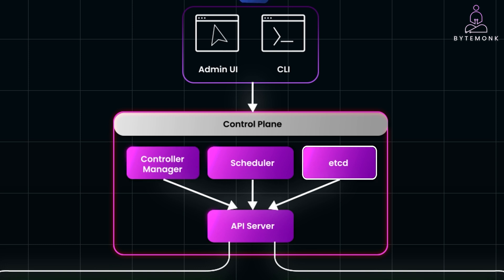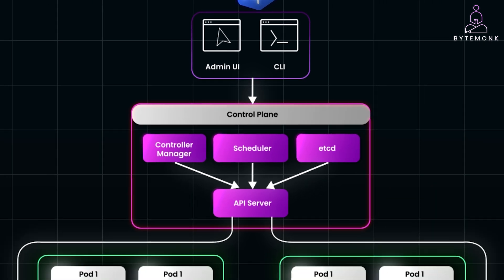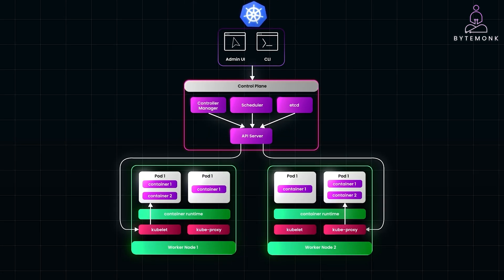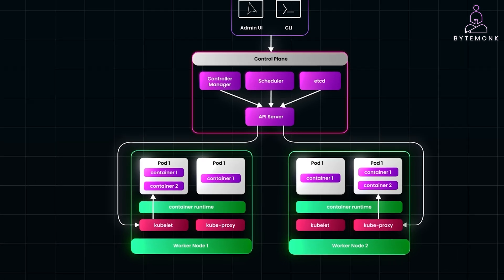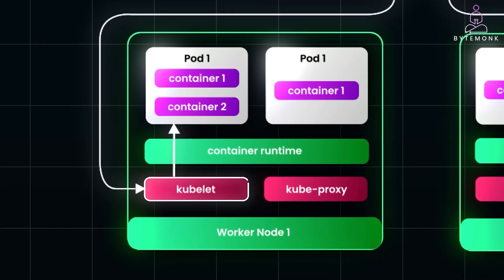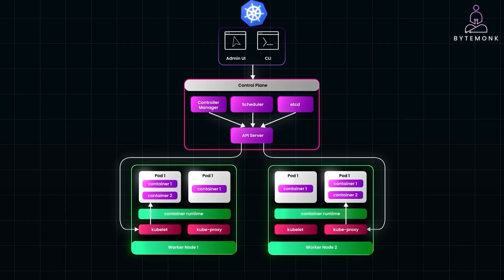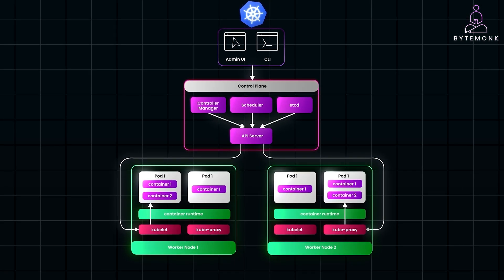etcd is a distributed key-value store that keeps track of the current state of the cluster. The actual containers run on nodes, which are the working machines in the cluster. Each node has a kubelet — an agent responsible for communicating with the control plane and running containers. So when you deploy your app, Kubernetes schedules it onto the appropriate nodes, makes sure everything is up and running, and handles traffic between the different parts of your app using services.